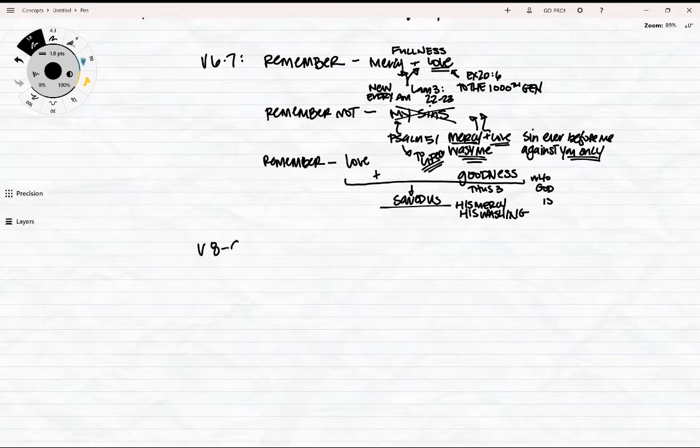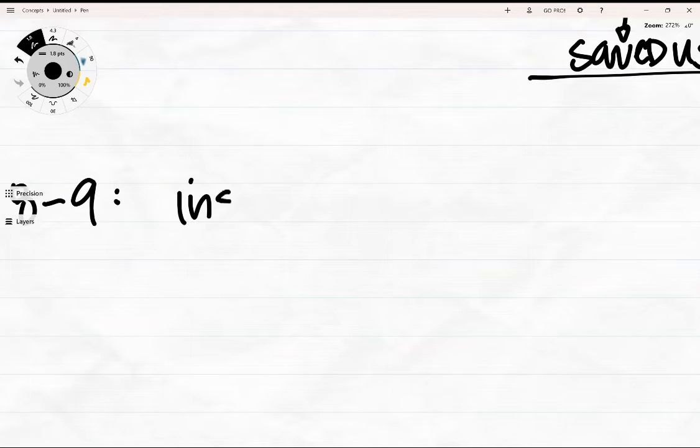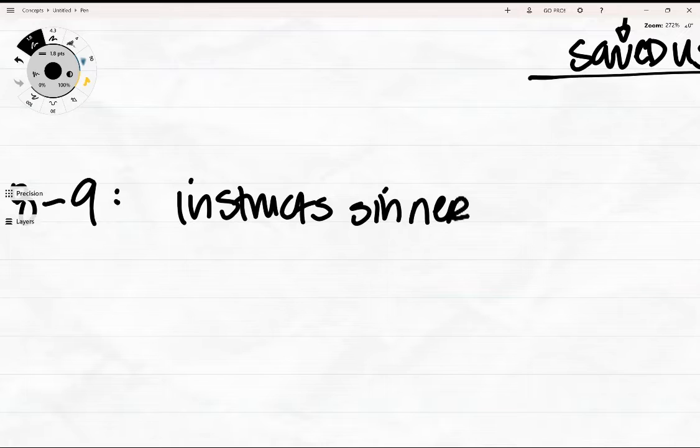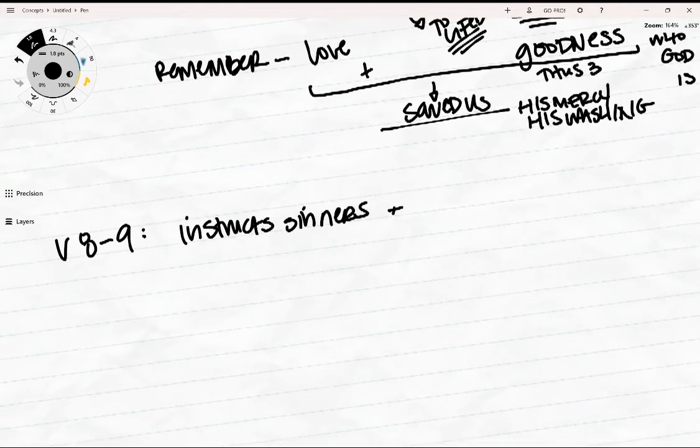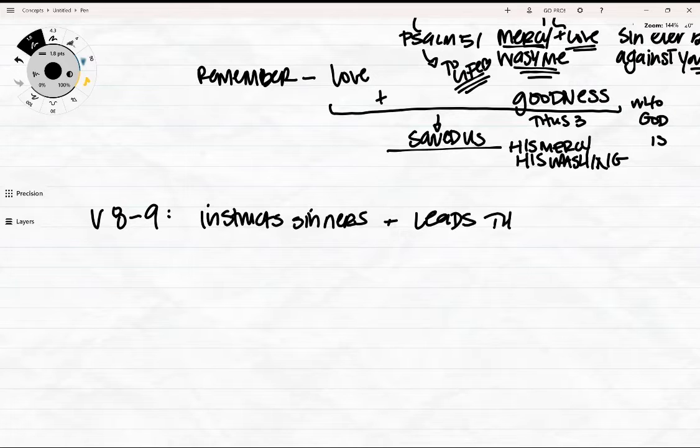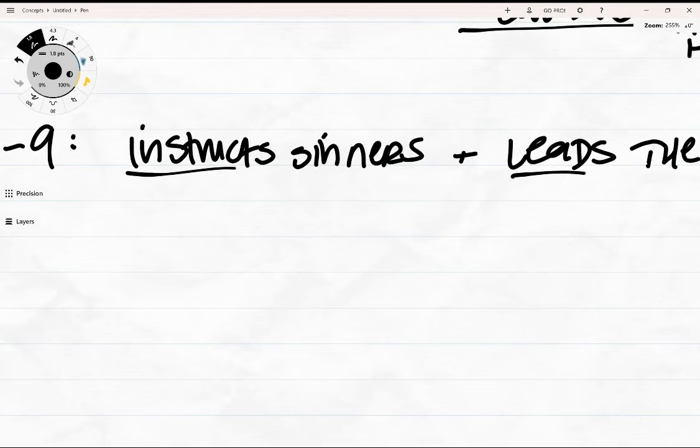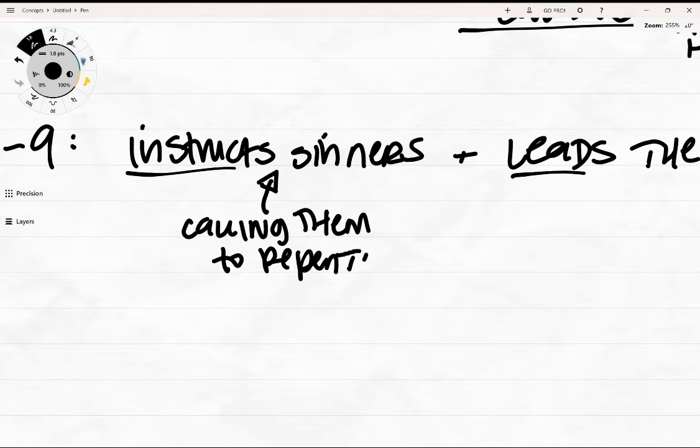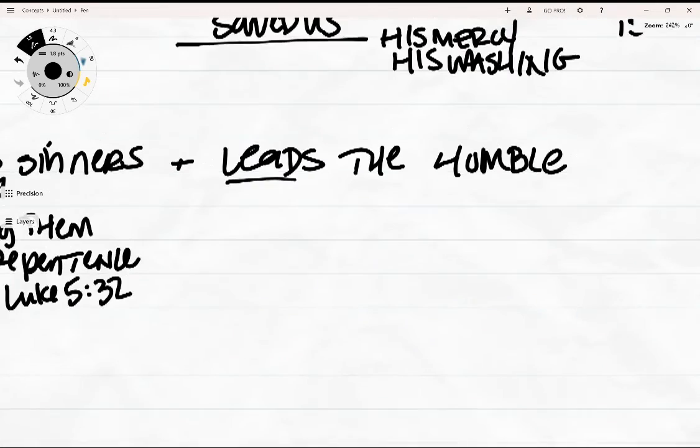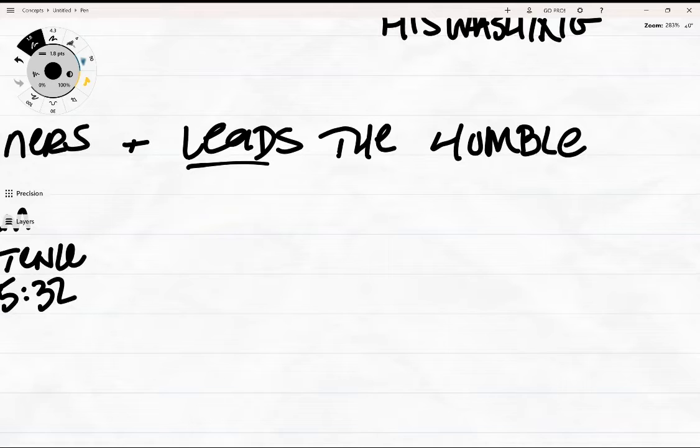Verse 8 and 9. Good and upright is the Lord. Therefore he instructs sinners in the way. He leads the humble in what is right and teaches the humble his way. Our God who leads us in his ways, he is good and upright. There is no one more true than him. He doesn't just let us walk in his ways. He actually teaches us and leads us in them. When Jesus was teaching here on earth, he ate and talked with sinners and told the Pharisees and the scribes, I have not come to call on the righteous but sinners to repentance. Luke 5:32. God doesn't keep salvation a big secret. He lovingly teaches it to us. He guides us to him. And he leads the humble in what is right, teaching them his way.